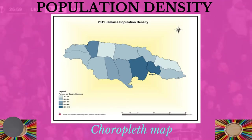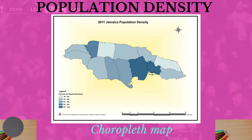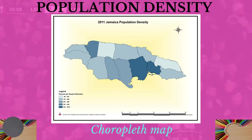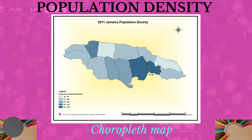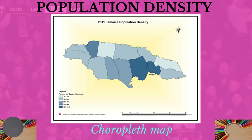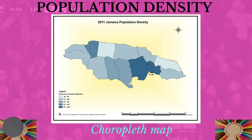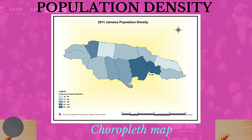The map being shown is called a choropleth map and is a common method of showing population density. On this map, each shade of color represents a different density value. Unlike the dot map, it does not indicate the exact places where people live or do not live. In fact, it gives the impression that people are evenly distributed within each parish. However, this map is very useful when comparing the population densities of different places.